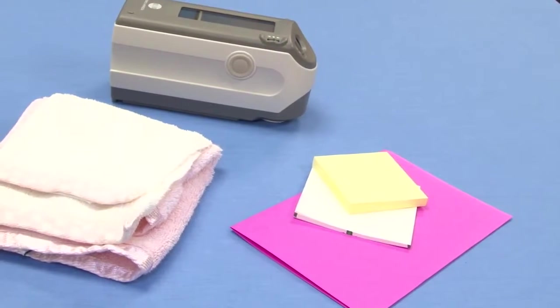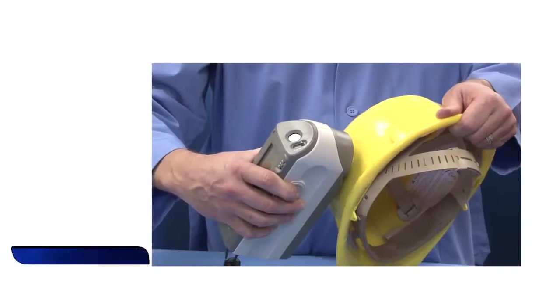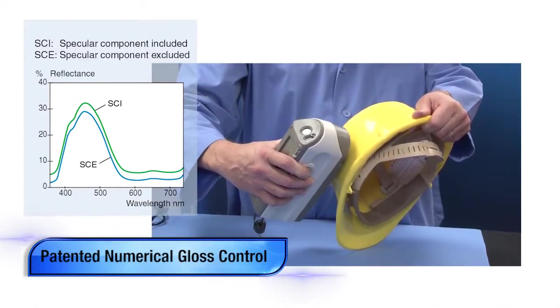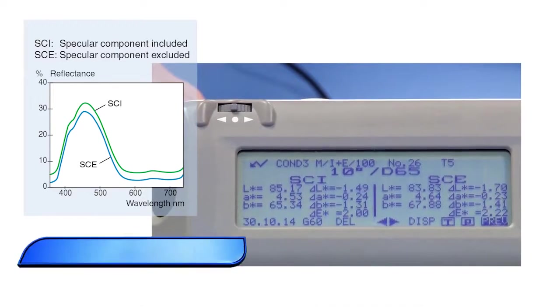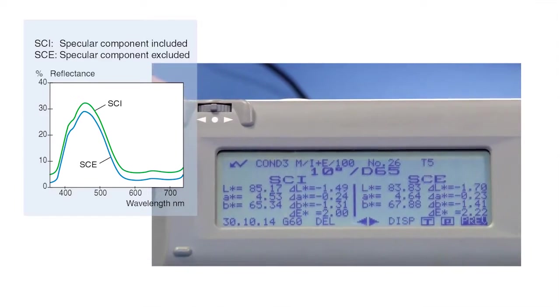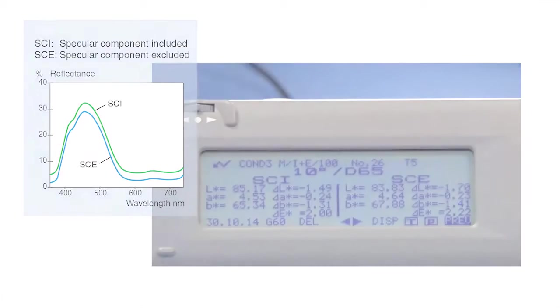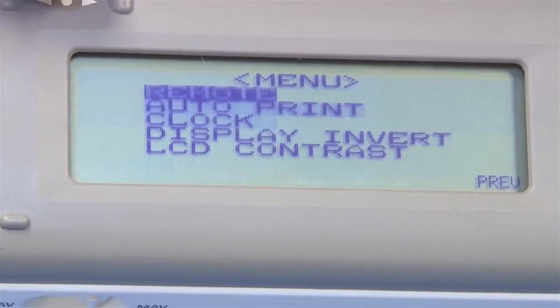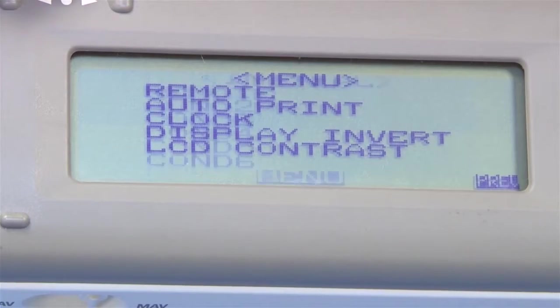Simultaneous SCI and SCE measurements are performed to ensure consistent color and appearance. With the conveniently placed navigation wheel, quickly scroll through the navigation wizard or manually select options through the intuitive internal software.